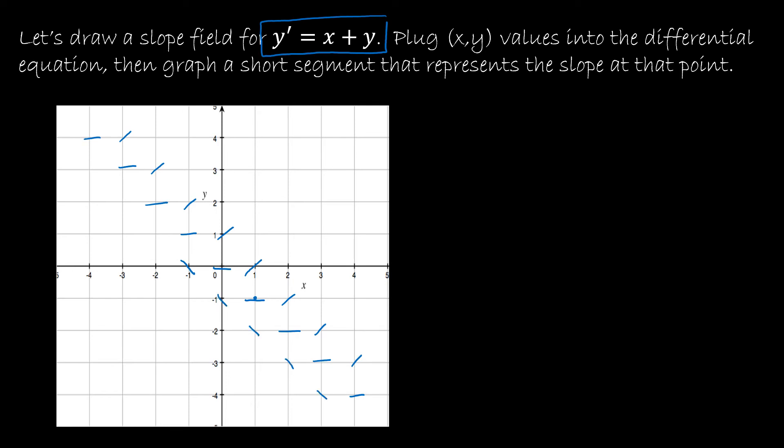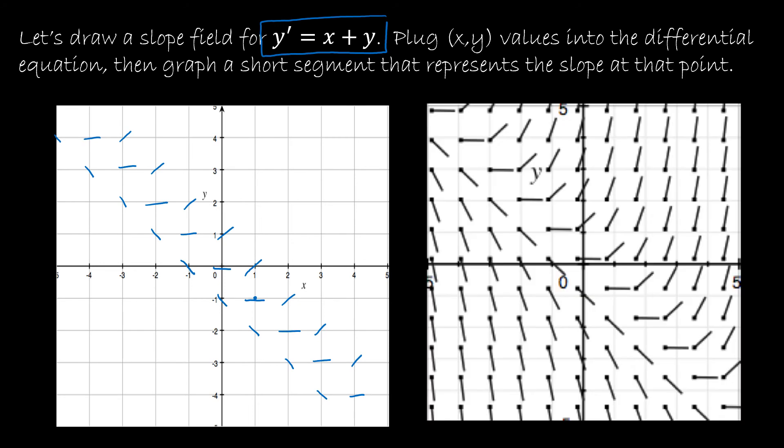I'm not going to continue this because it would be silly to keep doing this manually. Typically, we are going to have technology create the slope field for us. We can see here that this is a slope field that has been created by technology.